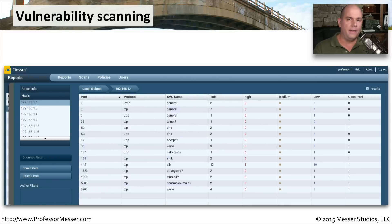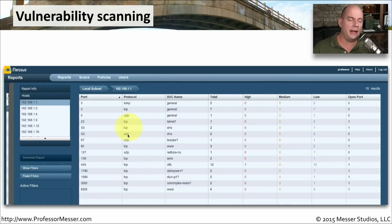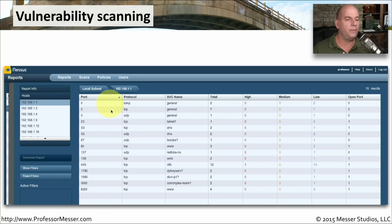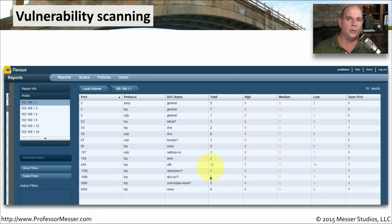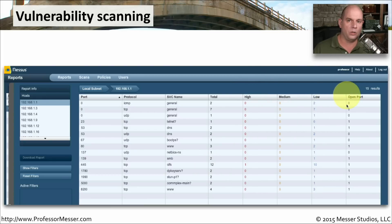Here's a good example of a vulnerability scanning report. I put my vulnerability scanner — this is Nessus — and I told it to scan everything on my 192.168.1 network. It found a number of devices and showed me for all of those devices what it was able to find: port numbers that were open, the protocols that normally run over those port numbers, and the services. Then it gives a total number of vulnerabilities identified, categorized as high, medium, and low, and tells me if any of those ports were open.